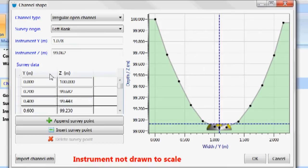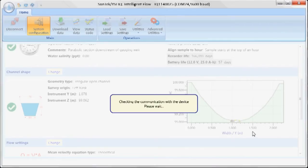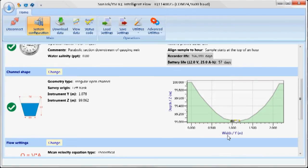The next thing is the actual survey data. We can program this in manually. We can also import channel data using a CSV file. We can append the survey point. We can insert survey point. There's literally an unlimited number of survey data points that you can use. So it's pretty simple, pretty quick, and we program the device.